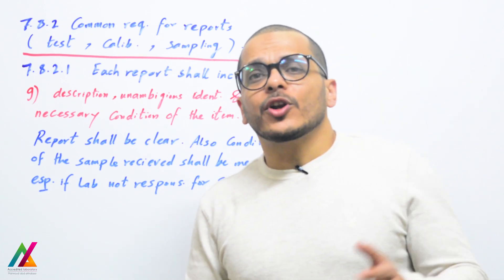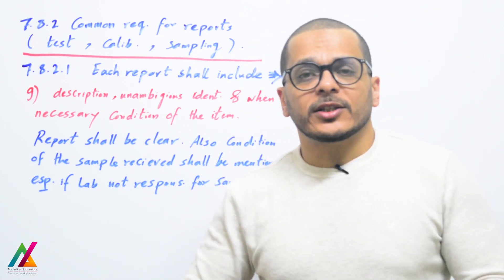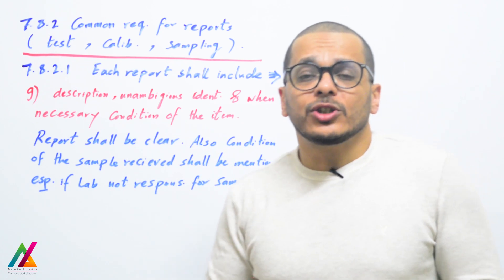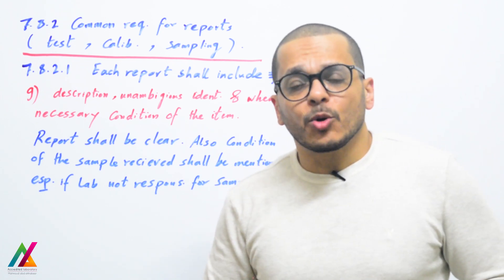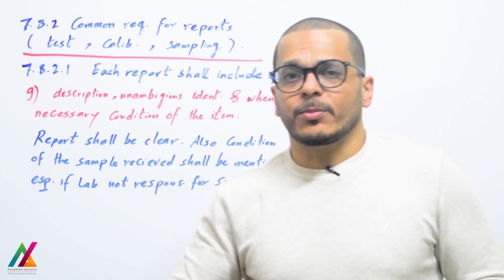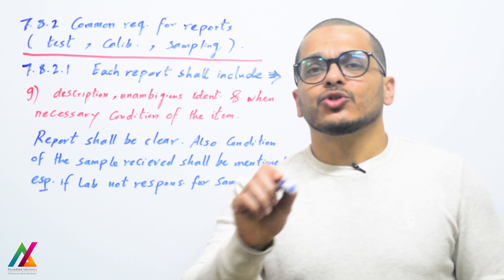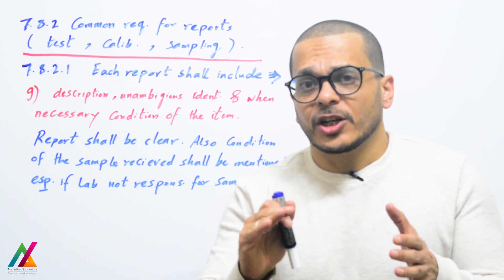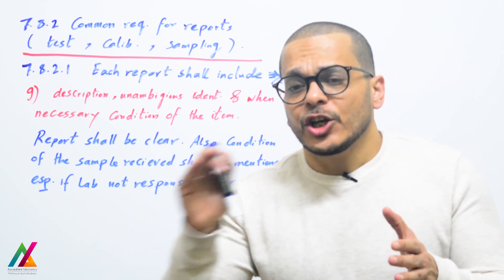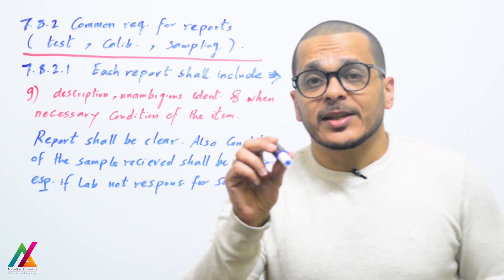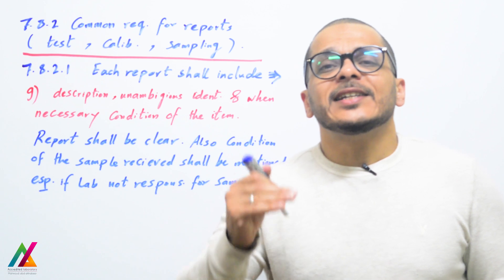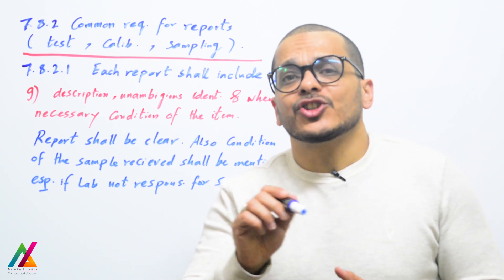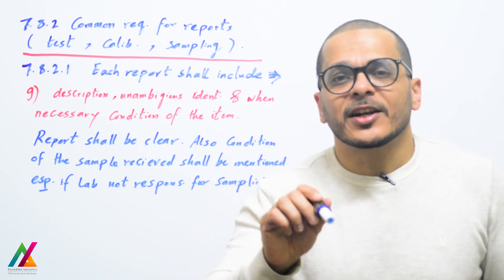The report shall include a description and unambiguous identification of the item, and when necessary, the condition of the sample. The condition of the sample shall be mentioned in the final report, especially if the lab is not responsible for sampling — in which case you state that in the report. If you receive a sample from the customer in a condition that does not meet the required condition, you shall inform the customer that this may affect the validity of results.